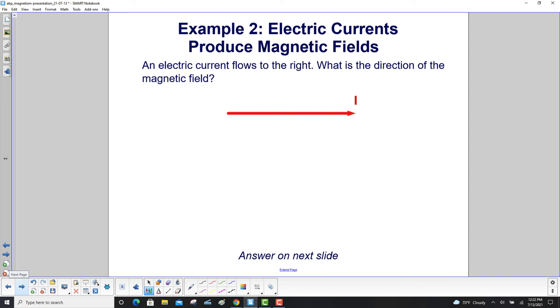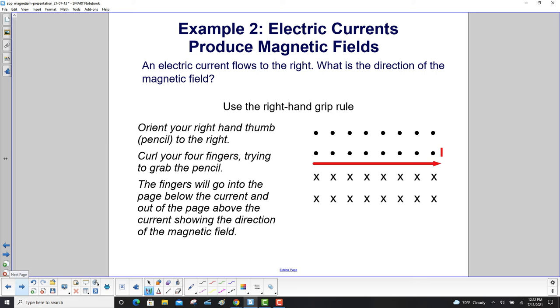An electric current flows to the right. What is the direction of the magnetic field? Use the right-hand grip rule. Orient your right-hand thumb to the right, same direction as the current. Curl your four fingers - your fingers should be on this side, kind of stubby fingers, but curl them around the current trying to grab the pencil. The fingers will go into the page below the current, and then you keep curling them, and they'll come out of the page on the other side of the current. If you were to look at that diagram from the right, if you could somehow get into the page and look from the right, you'll see that that's encircling the current-carrying wire.